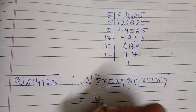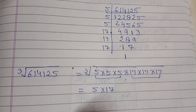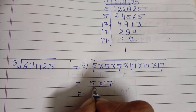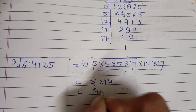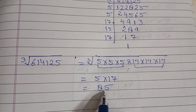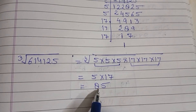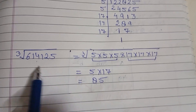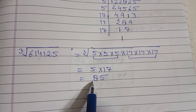When we take one from each group of three, we get 5 multiplied by 17, which is 85. So the cube root of 614125 is 85.